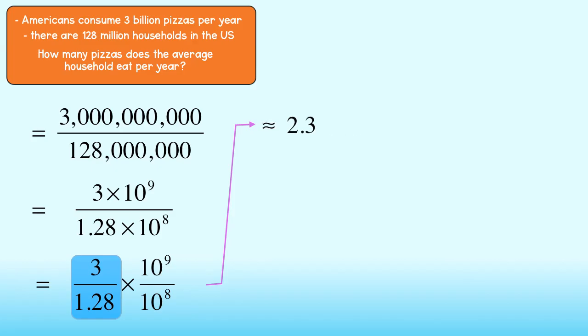Then, using the quotient rule, I subtract exponents to get 10 to the first power. I can leave my answer in scientific notation or quickly write it in standard notation to see that the average household consumes about 23 pizzas each year.